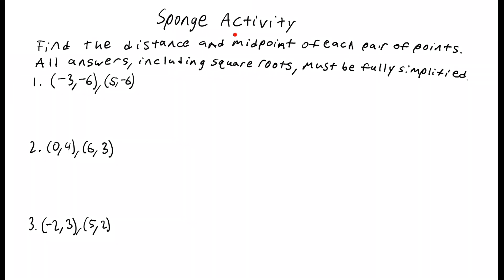All right, now time for the sponge. I want you to find the distance and midpoint of each pair of points. And make sure all your answers, including the square roots, are fully simplified. So if you have any fractions, make sure they're fully reduced. And if you have any square roots, make sure there's no perfect squares underneath them. Take them all out, like we learned last class. All right. So we've got these two points, these two points. Find the distance between the two and the midpoint between the two. So, two different answers. Same thing here. This point and this point. Find the distance between the two. Find the midpoint between the two. And this point and this point.